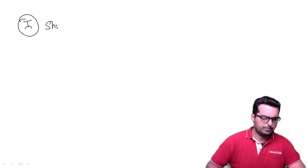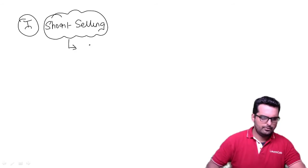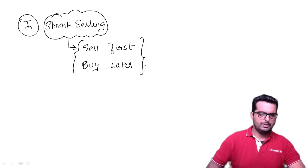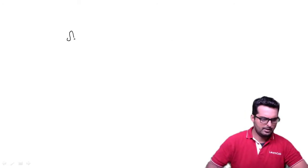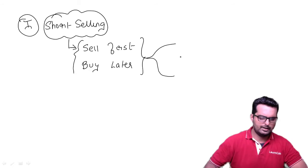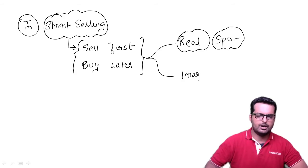The first sub-concept is short selling. Short selling means we sell first and then buy later. This can happen in two markets: the real market, also called the spot market, or the imaginary market, which is actually called the derivative market.